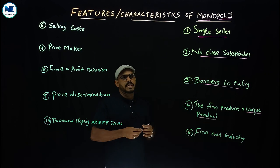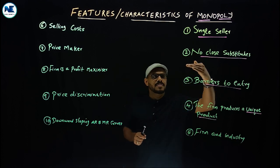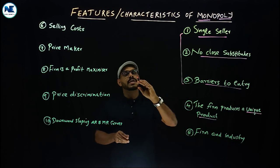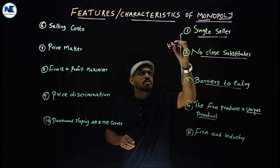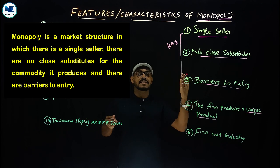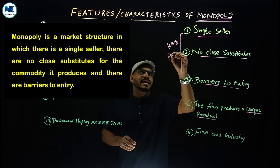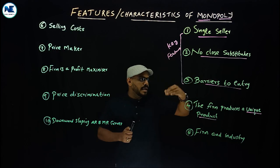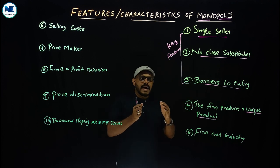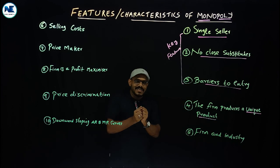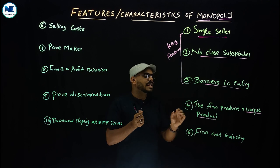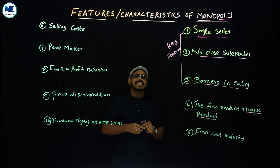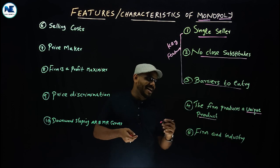The fourth feature is that the firm produces a unique product. This is also very important. The key and fundamental characteristics of monopoly include: single seller, no close substitutes, high barriers to entry, and now the unique product. Under monopoly, the seller or producer is producing a unique product, and the monopolist sells this in the market.